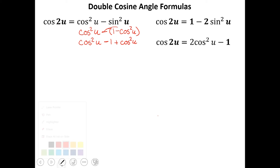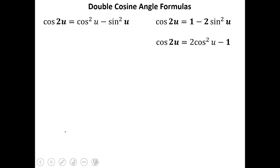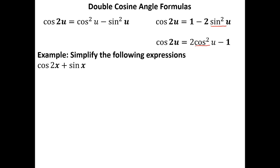Notice that these two equations are useful in the sense that you can get the expression in terms of just sine or just cosine. Now let's look at an example: cosine of 2x plus sine of x. Since we're dealing with sine of x and can't simplify that part further, our best bet is to convert the cosine of 2x into the sine-only form. With U equal to x, that gives us 1 minus 2 sine squared of x plus the sine of x. We could simplify further by factoring, but there's nothing obvious to factor out right now.